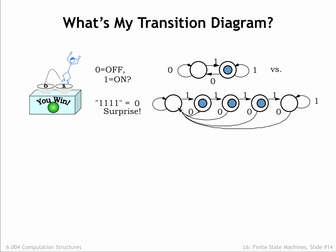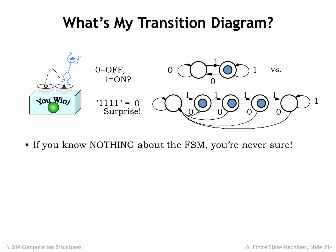Consider the following two state transition diagrams. The top diagram describes the behavior we observed in our experiments: pushing 0 turns the light off, pushing 1 turns the light on. The second diagram appears to do the same thing, unless you happen to push the 1 button four times in a row. If we don't have an upper bound on the number of states in the FSM, we can never be sure that we've explored all of its possible behaviors.